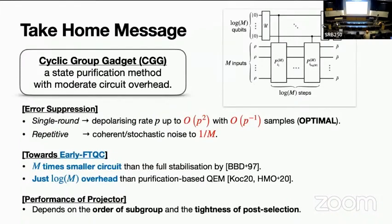To summarize: we designed a cyclic group gadget that suppresses error rate p to its quadratic order with an optimal linear sample cost. The circuit implementation cost is drastically reduced from previous work, and is only log m times larger than purification-based quantum error mitigation methods. We also analyzed which component is influential in suppressing errors in the quantum state rather than just the expectation value.